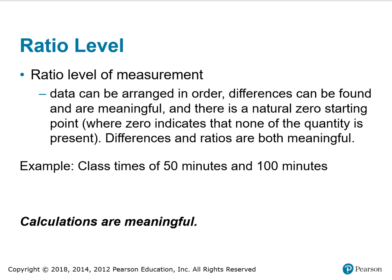Ratio level of measurement: data can be arranged in order, differences can be found and are meaningful, and there is a natural zero starting point where zero indicates that none of the quantity is present. Both differences and ratios are meaningful. For example, class times of 50 minutes and 100 minutes. Calculations with ratio level data are meaningful.